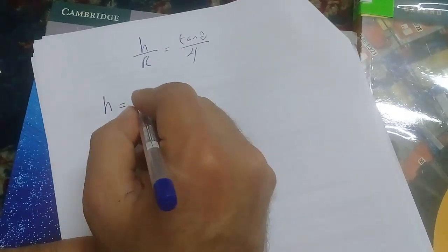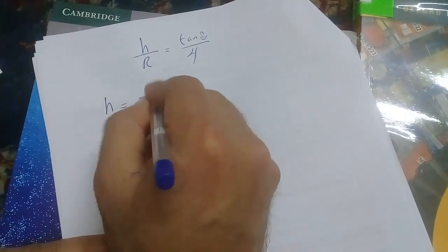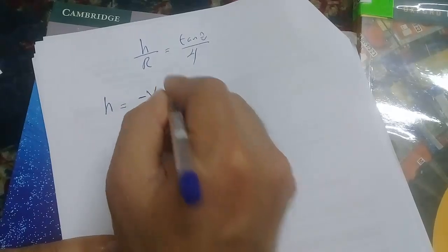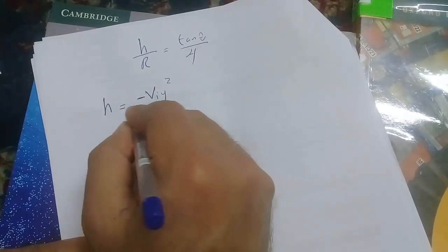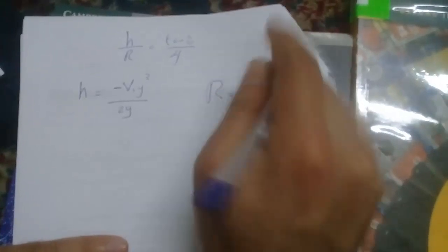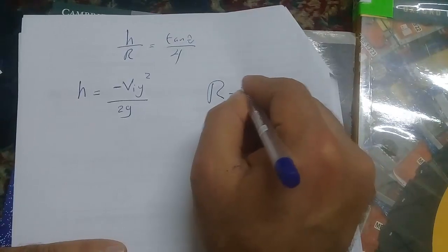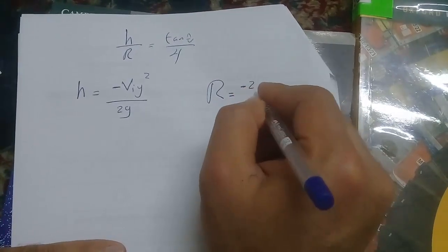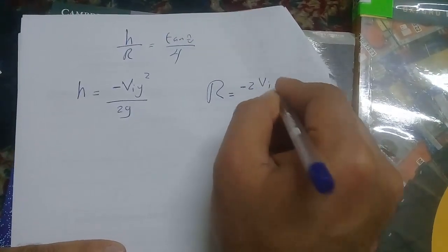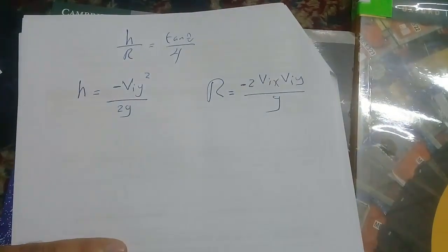We have learned that H, the maximum height reached by the projectile, can be calculated from this relation: V_iy squared over 2g. And the horizontal range can be calculated from this relation: negative 2·V_ix·V_iy over g.